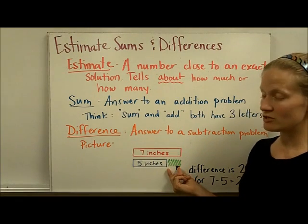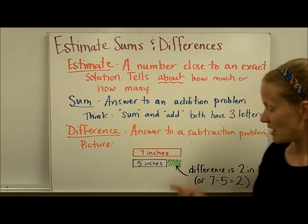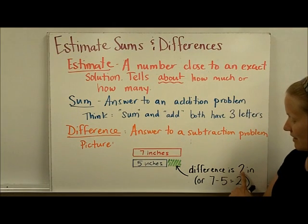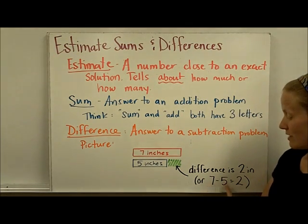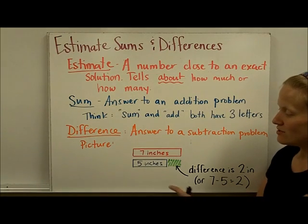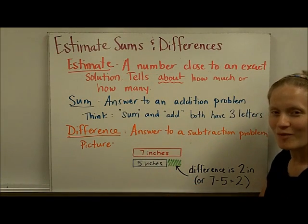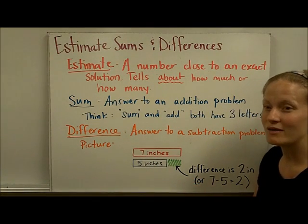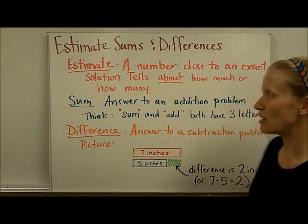5 inches is 2 inches shorter than the 7 inches, and we got that difference of 2 by doing a subtraction problem: 7 minus 5. So picturing this model might help you think about why the word difference means subtraction.